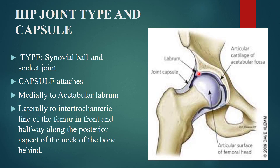Medially, the joint capsule is attached to the acetabular labrum of the hip bone. Laterally, it is attached to the intertrochanteric line of the femur in front and halfway along the posterior aspect of the neck of the femur behind.